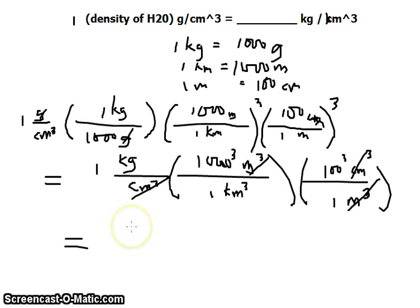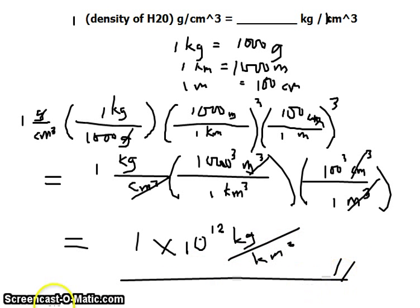We will get, using your calculator, an answer that is 1 times 10 to the 12th power kilogram per cubic kilometer. That's the density, that's our solution.